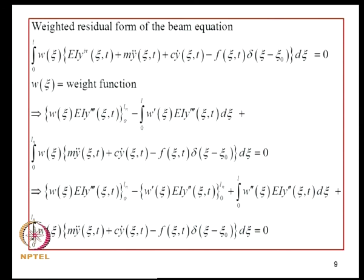To get the weak form, we carry out integration by parts so that the demands on continuity on trial functions and weight function can be equally distributed — this was seen in the previous lecture. Performing integration by parts twice leads to the weak statement of the equation.